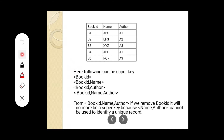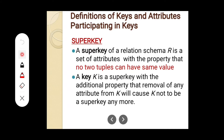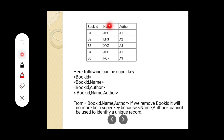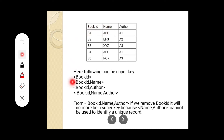So we have the following super key: book_id. Now, super key can have a set of attributes. Let us consider book_id and name — is it unique? Look at here: B1, A, B, C. Is there anything similar to B1, A, B, C? No, it is not repeating. Only B4, A, B, C is separate. B2, E, F, G — is it repeating? No. B3, X, Y, Z — is it repeating? No. So book_id and name can be considered as a super key.